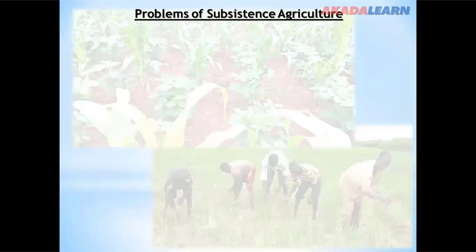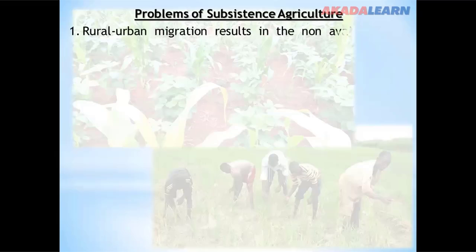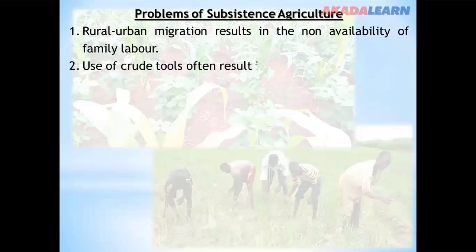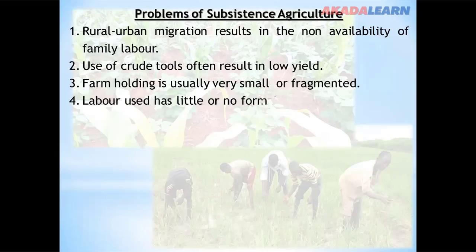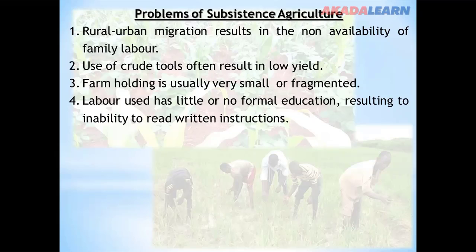What are the problems of subsistence agriculture? Rural-urban migration results in non-availability of family labor. Use of crude tools also results in low yield. Farm holdings are usually very small or fragmented. Labor used has little or no formal education, resulting in the inability to read written instructions.